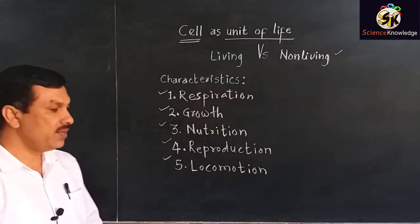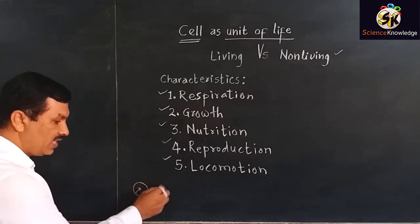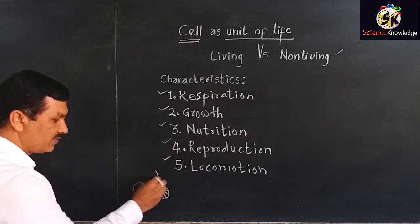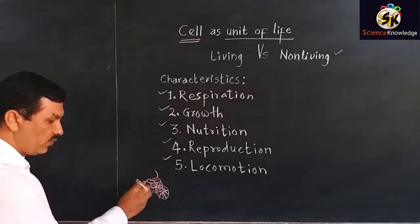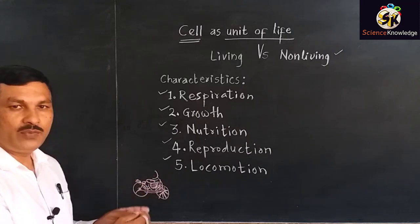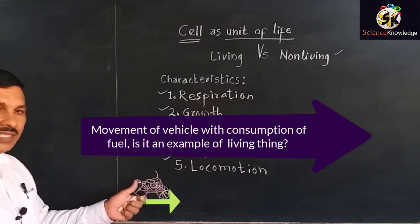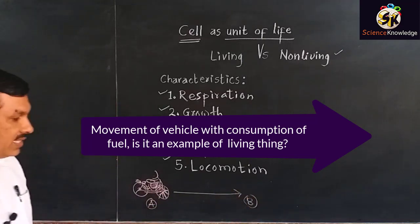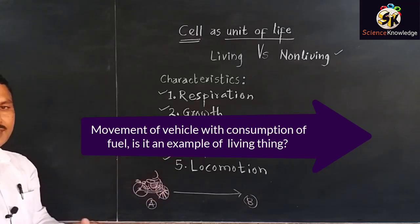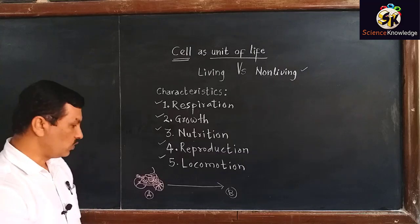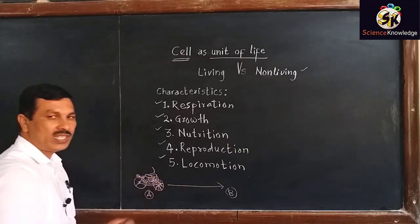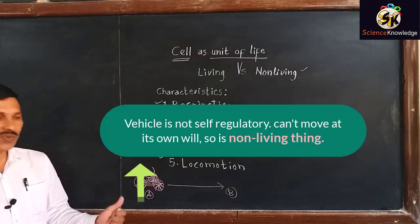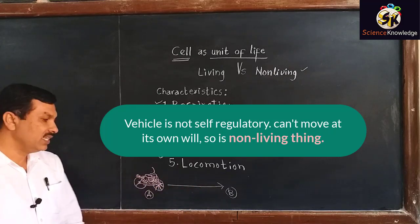Now we will take an example of a vehicle. Suppose we have a two-wheeler, and this two-wheeler requires energy for movement. We will add fuel in this vehicle and that fuel will serve as a source of energy. Once this vehicle is started, it will move from one place to another place. Now, as this vehicle shows locomotion and requires energy, will we call it a living being? No — because even though the vehicle moves from one place to another, it requires somebody to drive it. The vehicle cannot move on its own, and that is why it is a non-living thing.